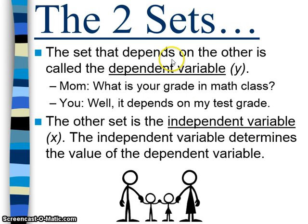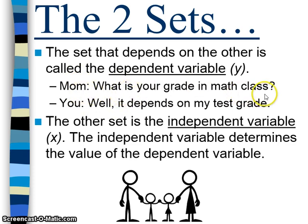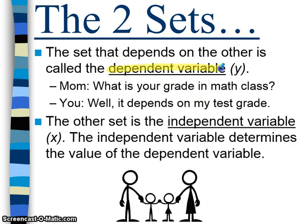The set that depends on the other is called the dependent variable. It is also represented by the variable Y, so anytime you see the variable Y, it is going to be representing a dependent variable. Here's a conversation between you and your mom: your mom says, 'What is your grade in math class?' And you say, 'Well, it depends on my test grade.' The dependent variable is your grade — your grade depends on your test. So your grade in math class is the dependent variable because it is relying on how well you do on your math test.